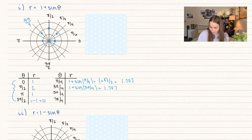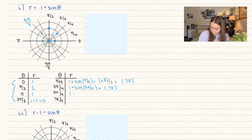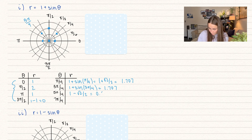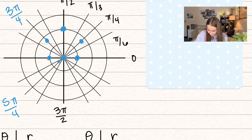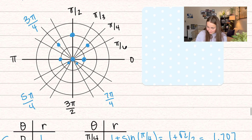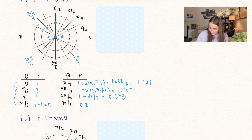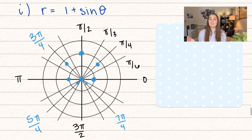For five pi over four, sine of five pi over four is negative root two over two, so one minus root two over two equals approximately 0.293. At angle five pi over four, we go out a very small radius of about 0.3. The same applies to seven pi over four — that's also 0.293. Now we have enough points and can see the shape going out and around.